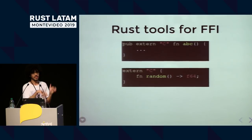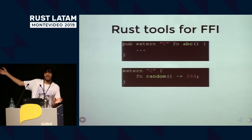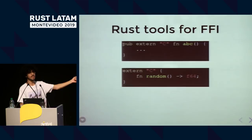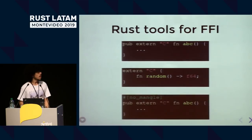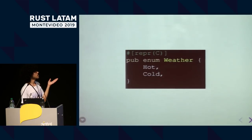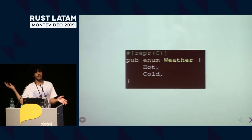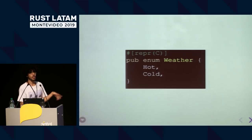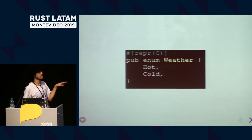There's also an extern block that does the opposite — you consume external functions in Rust. So if you're operating on iOS and you need to use a random function, you just create the signature because the implementation is elsewhere. There's also the `no_mangle` attribute, which does not mangle the function name, helping other compilers understand the function name. And there's `repr(C)`, which lays out your structs or enums in memory in a C way, helping other languages understand them. It's not always necessary — you can use opaque pointers instead.